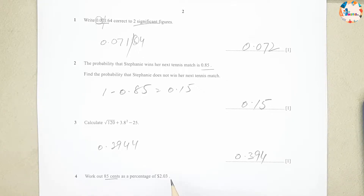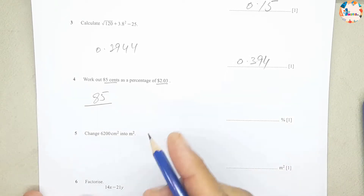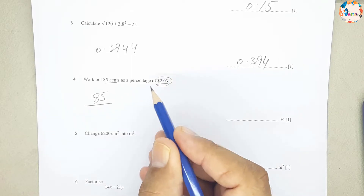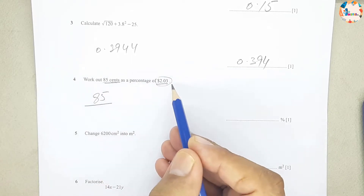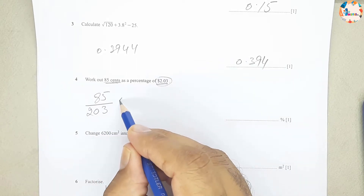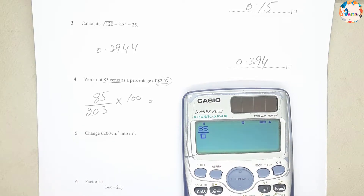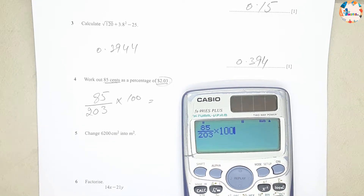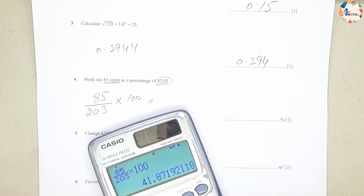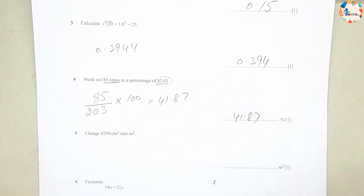Question number 4: work out 85 cents as a percentage of $2.03. We change dollars to cents, so it becomes 203 cents. The calculation is 85 divided by 203, multiplied by 100, resulting in 41.87%. Our final answer is 41.87.